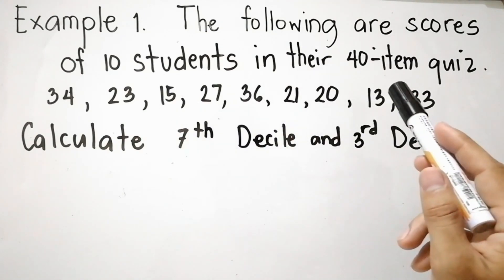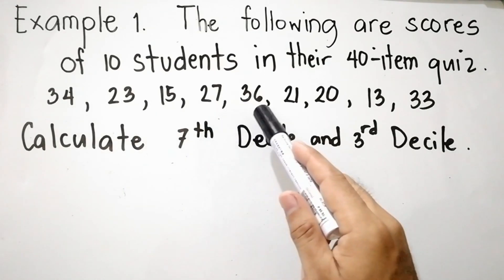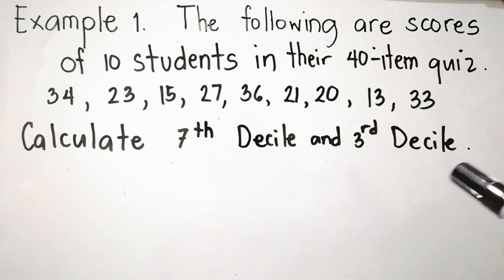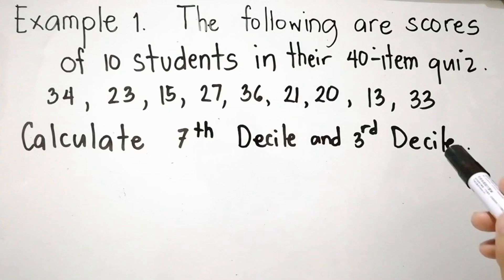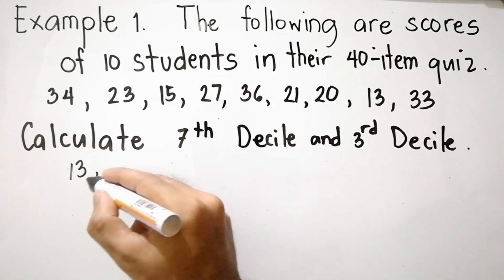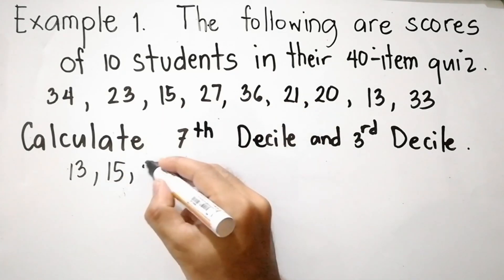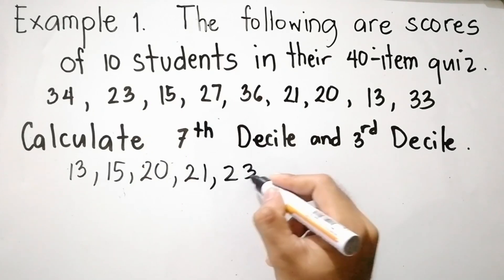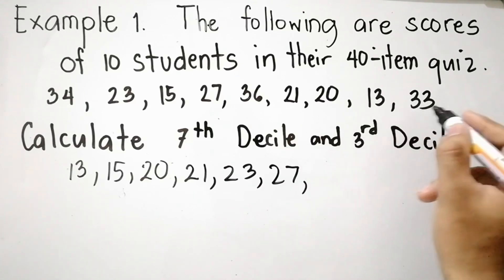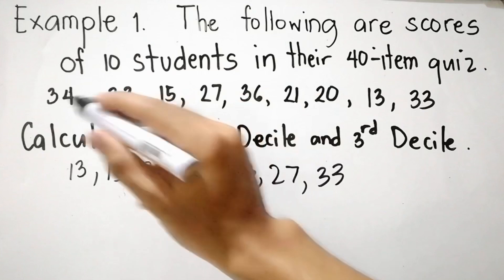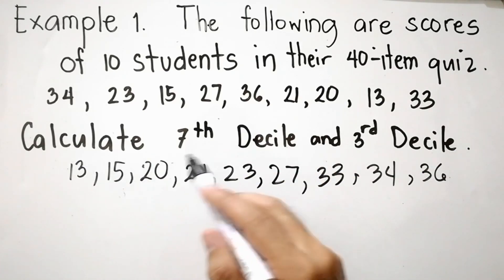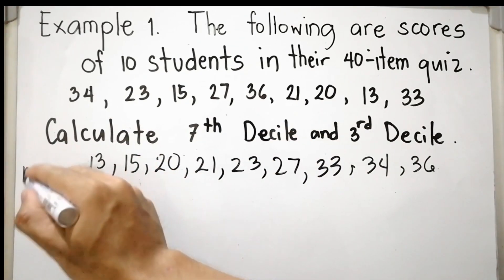Example number one: the following are scores of 10 students in their 40-item quiz — 34, 23, 15, 27, 36, 21, 20, 13, and 33. Calculate the seventh decile and third decile. The first step is to arrange the scores in ascending order from least to greatest: 13, 15, 20, 21, 23, 27, 33, 34, and 36. So we have 9 scores; n is equal to 9.